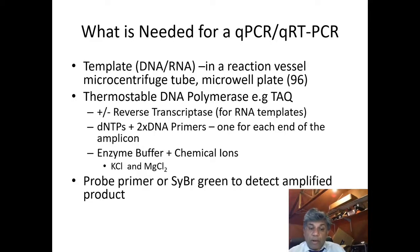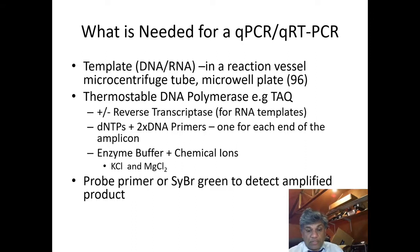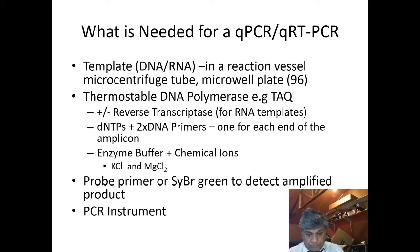You also need a probe primer if you have very specific detection requirements for the assay — these are already pre-designed in the kits you buy. Otherwise, you can use SYBR Green, which is a specific stain for DNA that will light up the reaction and fluoresce during the process, causing it to be measured on the PCR machine. Finally, you need the PCR instrument itself, which will carry out all the measurement of the progress of the reaction.